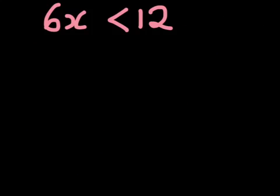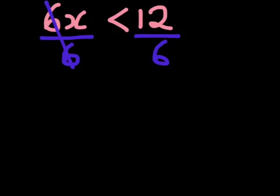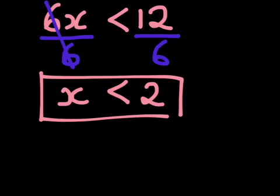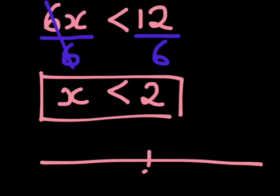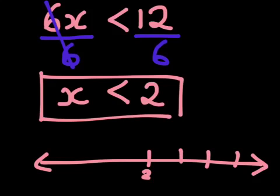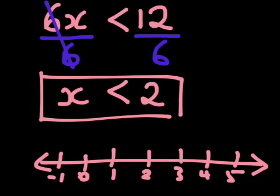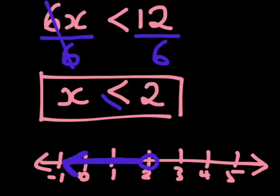If I asked you to solve this equation, the first thing you want to do is get x by itself. We would divide both sides by 6 to get rid of this coefficient — they cancel out — and we're left with x is less than 2. If I graph this on a number line, I'd have 2 in the middle, and because it's just a less than sign (no equal sign), I don't fill the circle in, but I want everything less than 2.